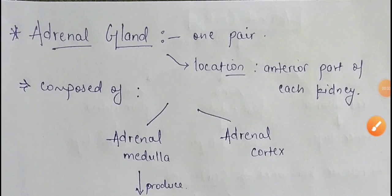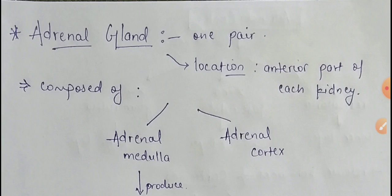Hello everyone and welcome back to our channel Biology Impulse. Today in this session we will discuss several hormones. In the previous session we discussed hypothalamic hormones, pituitary gland hormones, pineal gland, thyroid gland, and thymus gland. Now in this session we will discuss adrenal gland hormones, pancreas hormones, testis and ovary hormones, heart, kidney, and gastrointestinal tract hormones, and finally the hormone receptor complex.